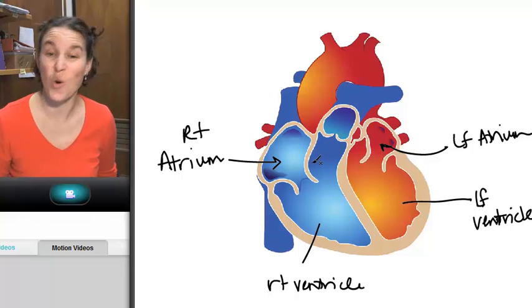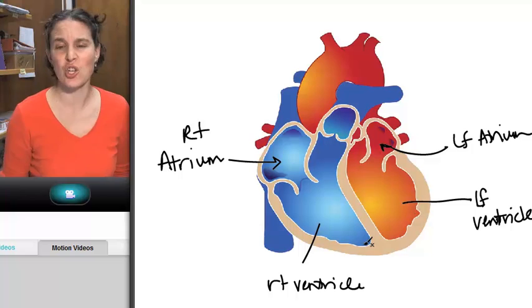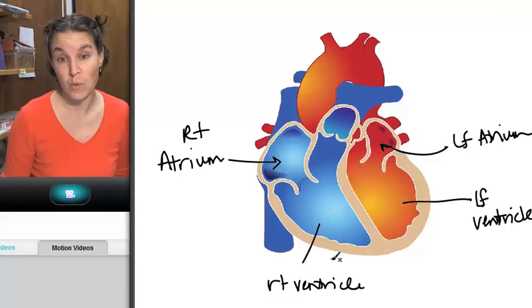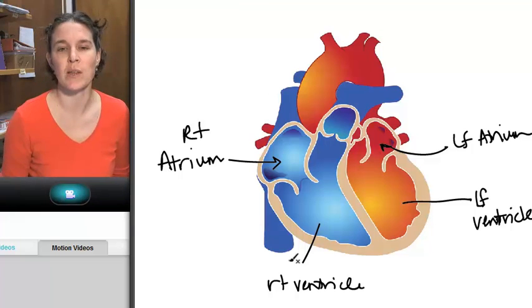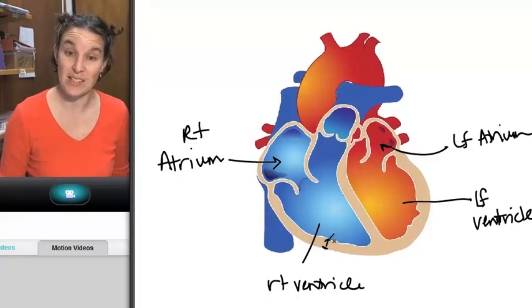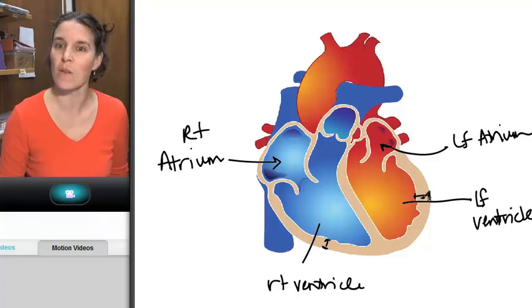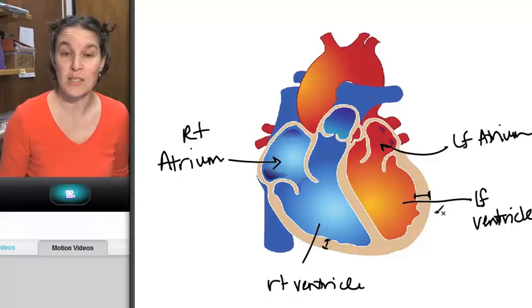One of the things I don't like about this diagrammatic vision is that it doesn't show you much of a difference in the size of the walls of the right ventricle versus the left ventricle. There's actually an enormous difference between them. The right ventricle is much thinner, and the left ventricle actually has a thicker wall. In a second you will see why.